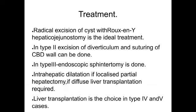Coming to treatment: radical excision of cysts with Roux-en-Y hepaticojejunostomy is the ideal treatment. In type 2, excision of diverticulum and suturing of common bile duct wall can be done. In type 3 — choledochocele — endoscopic sphincterotomy is done. For intra-hepatic dilatation, if localized, partial hepatectomy is done; if diffuse, liver transplantation is required. Liver transplantation is the choice in type 4 and 5 cases.